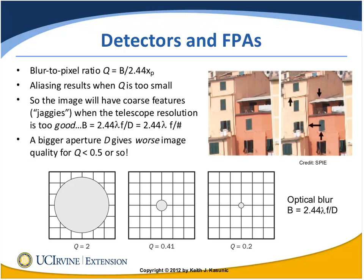For example, the blur might be 10 microns and the pixels might be spaced 2 microns apart. The blur is defined as 2.44 times the wavelength times the F-number — the usual expression. So Q equals the blur divided by the pixel pitch divided by another factor of 2.44.